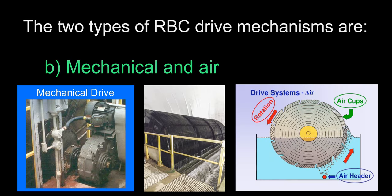The answer is B, mechanical and air. RBC stands for Rotating Biological Contactor, which is a biological fixed film treatment process used in the secondary treatment of wastewater. It consists of a series of closely spaced parallel discs mounted on a rotating shaft supported just above the surface of the wastewater. Microorganisms grow on the surface of the discs where biological degradation of the wastewater pollutants takes place. Most systems nowadays use a mechanical drive to rotate the media; however, some use a combination of both. Air can be useful to help with the sloughing process, which is when the biofilm falls off the media, and is necessary when wasting must be increased.